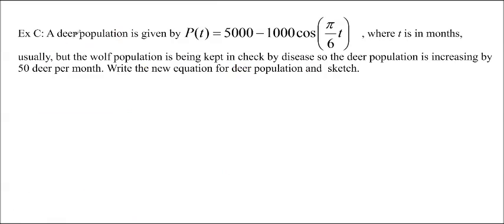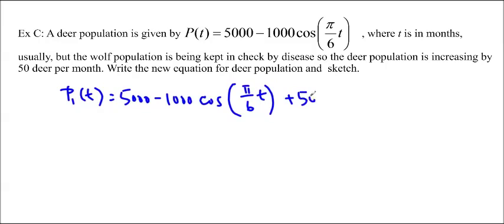A deer population is given by p of t equals 5,000 minus 1,000 cos pi over 6t, where t is in months. The wolf population is being kept in check by disease, so the deer population is increased by 50 deer per month. Write the new equation for deer population and sketch. So now our new population, p1 of t, is equal to 5,000 minus 1,000 cos pi over 6t plus 50t. The reason is because it's 50 deer per month, so 50t. It's increasing linearly.